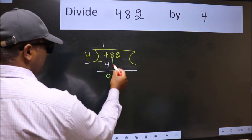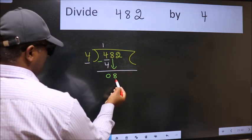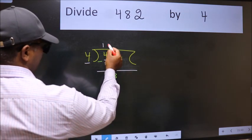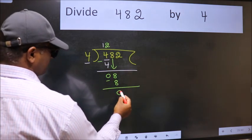After this, bring down the beside number. So, 8 down. When do we get 8 in the 4 table? 4 twos, 8. Now we subtract. We get 0.